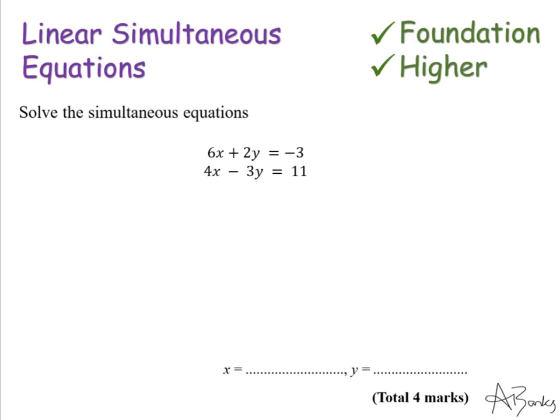So let's look at this question here. This question is to solve these simultaneous equations, and we're given these two equations here to solve. So there's a simple process that we're going to go through in order to find out what the value of x is and what the value of y is. The first thing I'm going to do to make sure my working out is really clear is I'm going to number these two equations. So I'm going to call this equation 1 and this equation 2.